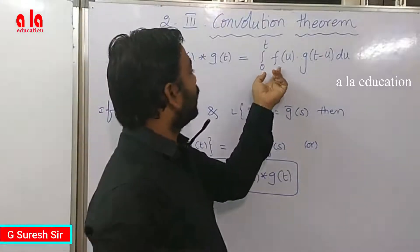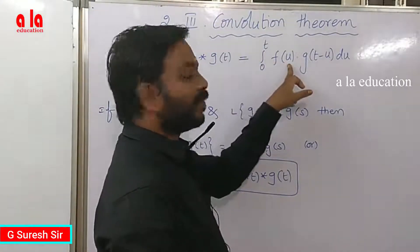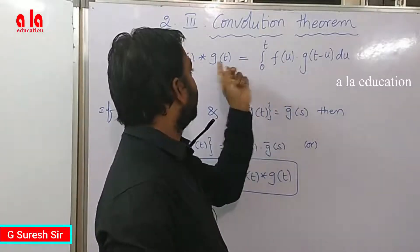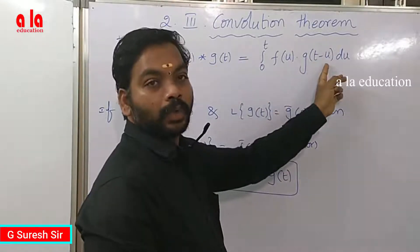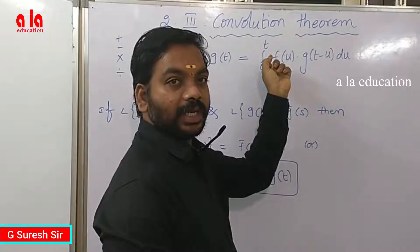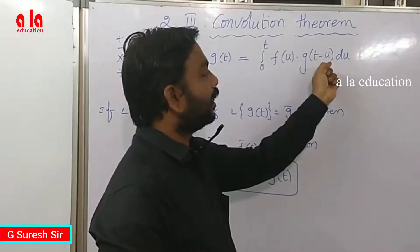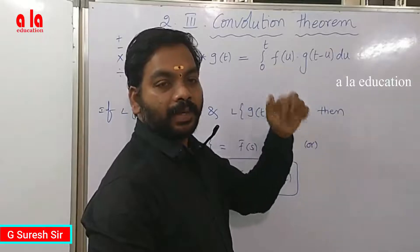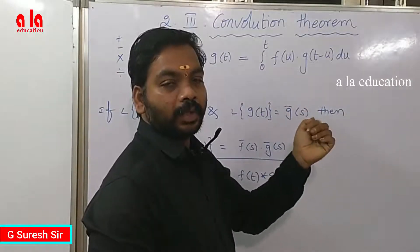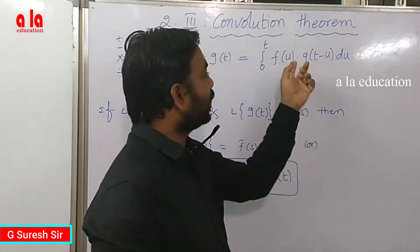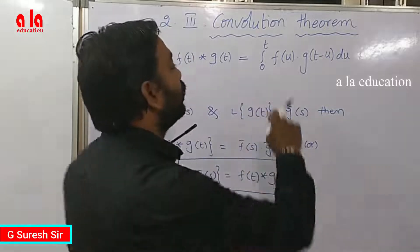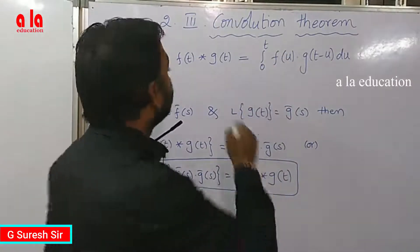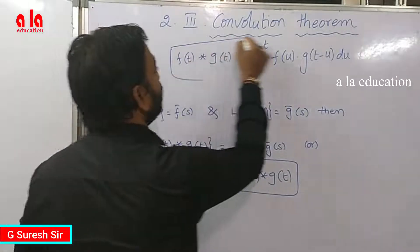Two functions are added. The first function is written in terms of u, and the second function is written in terms of t minus u. First function in terms of u and second function in terms of t minus u, with integration having limits 0 to t. This is called convolution product.